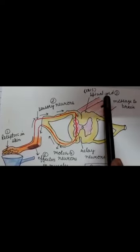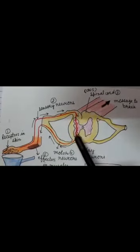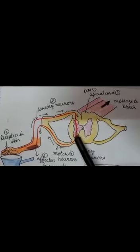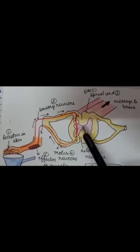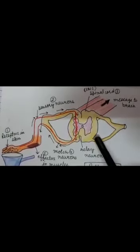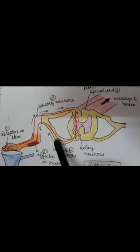The third component is the spinal cord or central nervous system. The impulse is transmitted from sensory neurons to motor neurons through relay neurons present in the central nervous system. However, no processing occurs during reflex action — just the passage of the message takes place.